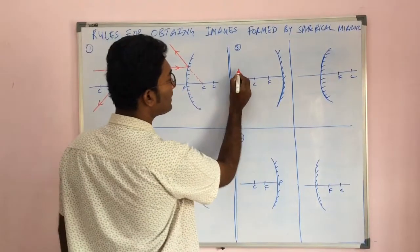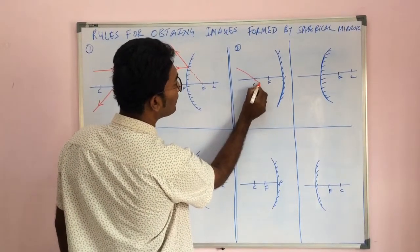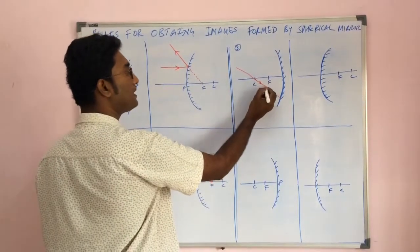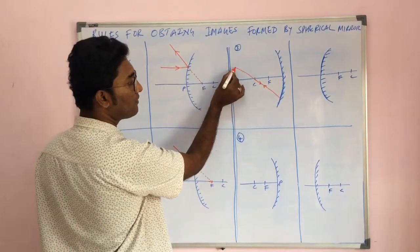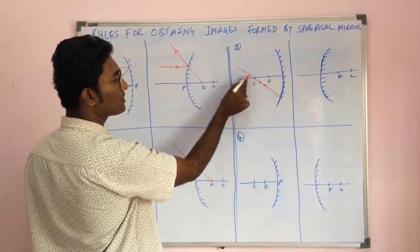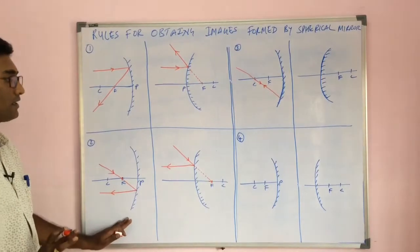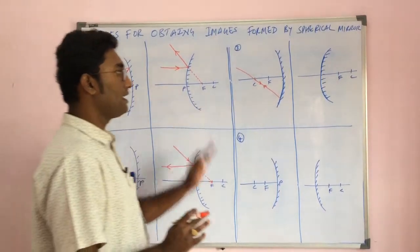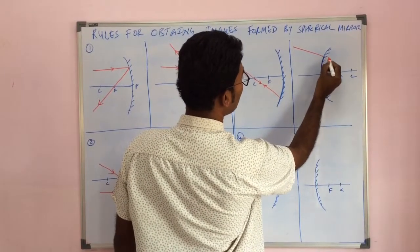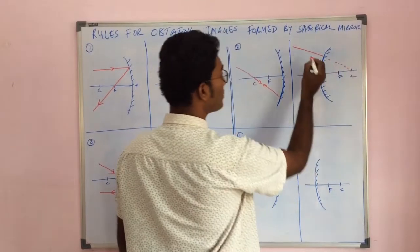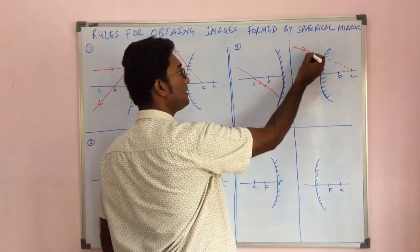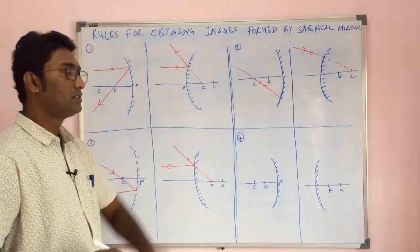The third rule says that if a light ray is traveling through the center of curvature, after reflection it retraces the same path. So a light ray traveling through the center of curvature strikes the mirror and reflects back along the same path. The same applies for a convex mirror — a light ray incident exactly on the center of curvature retraces the same path after reflection.